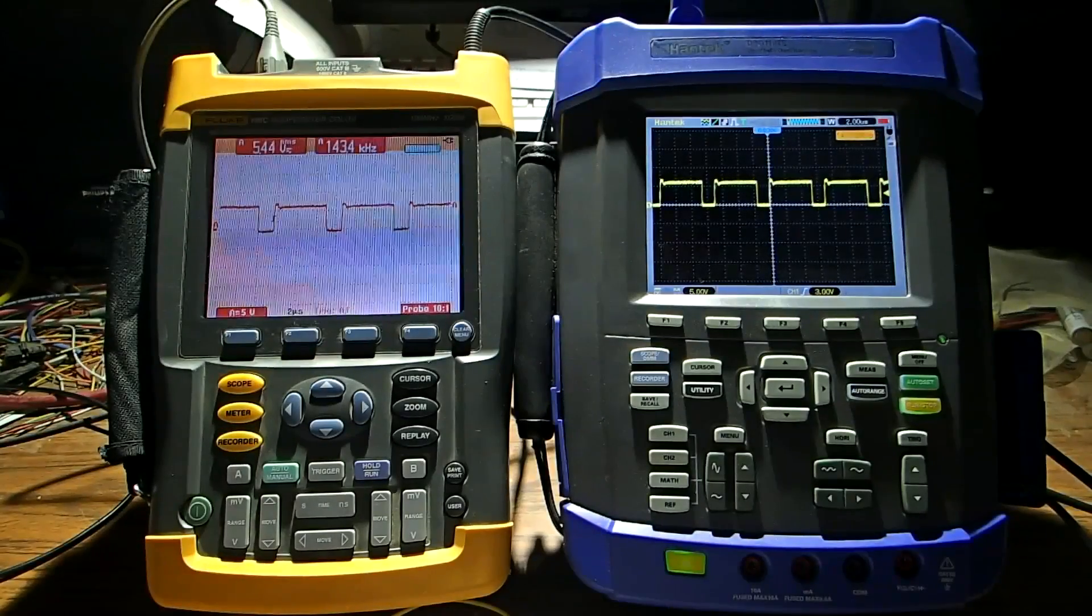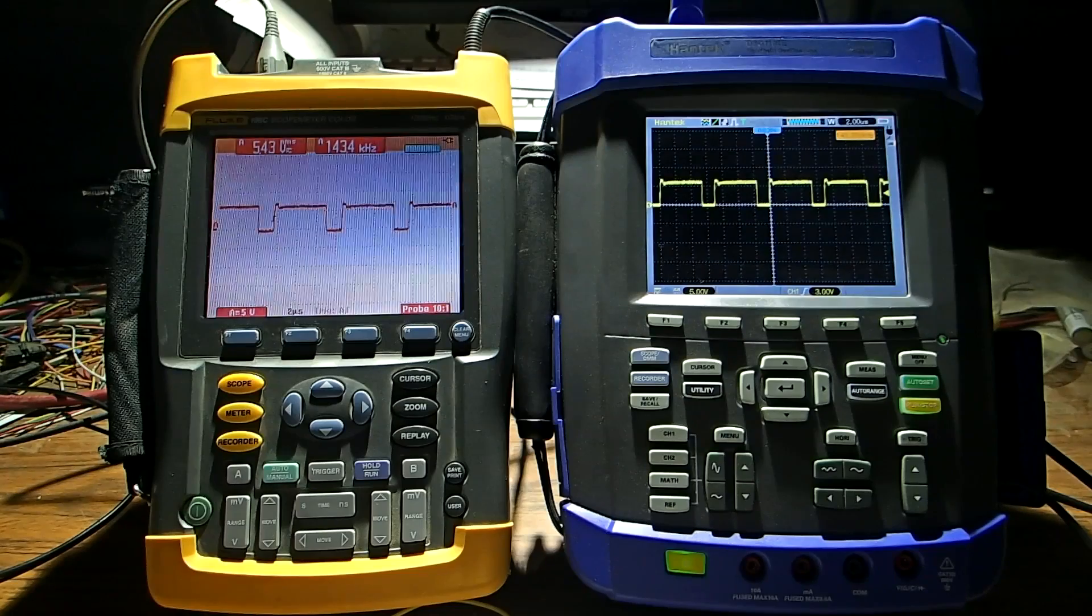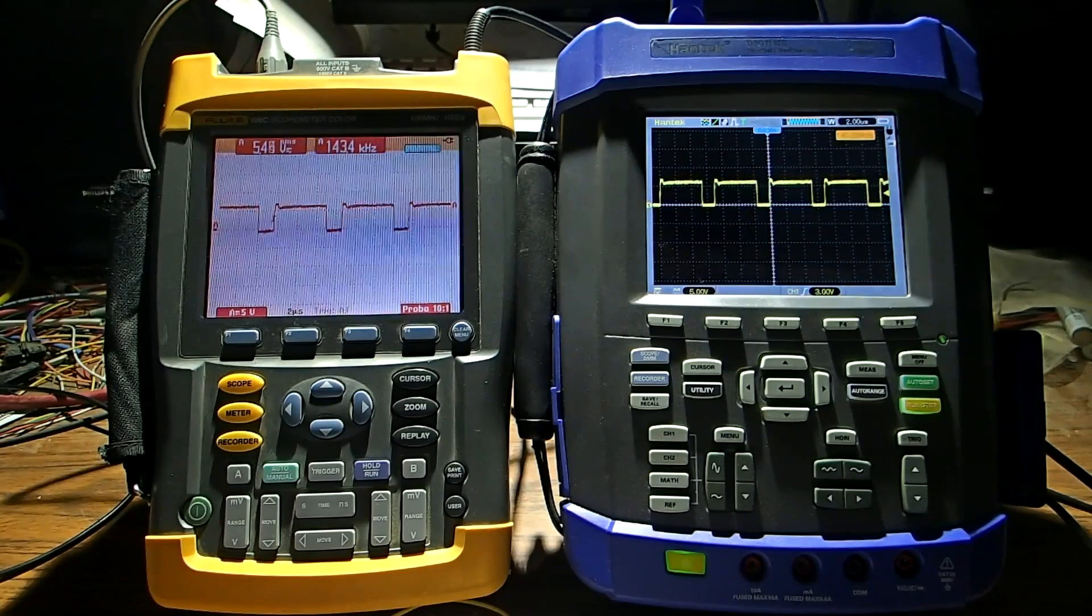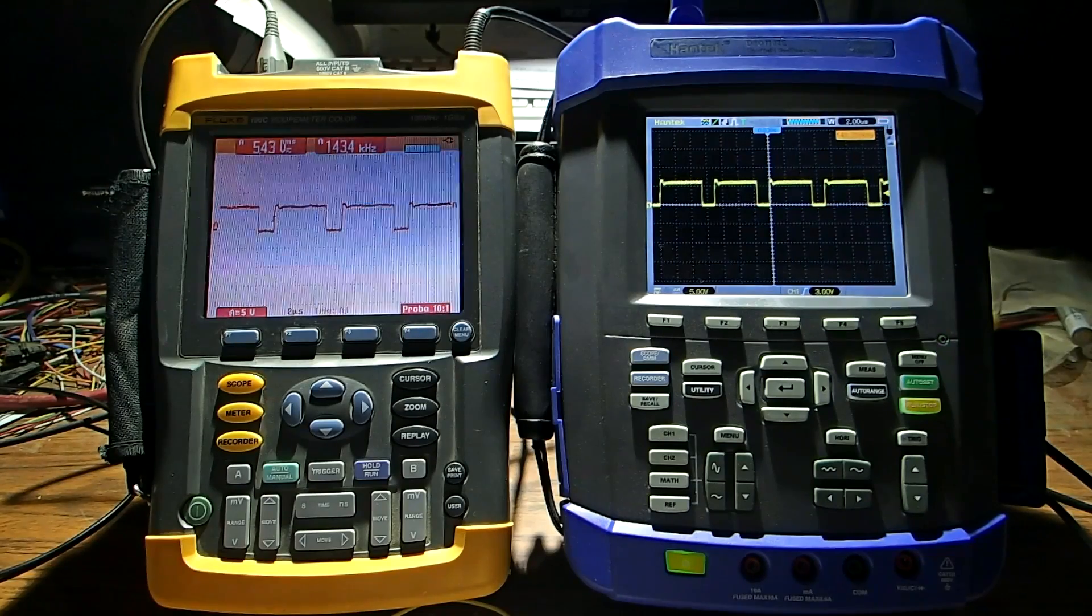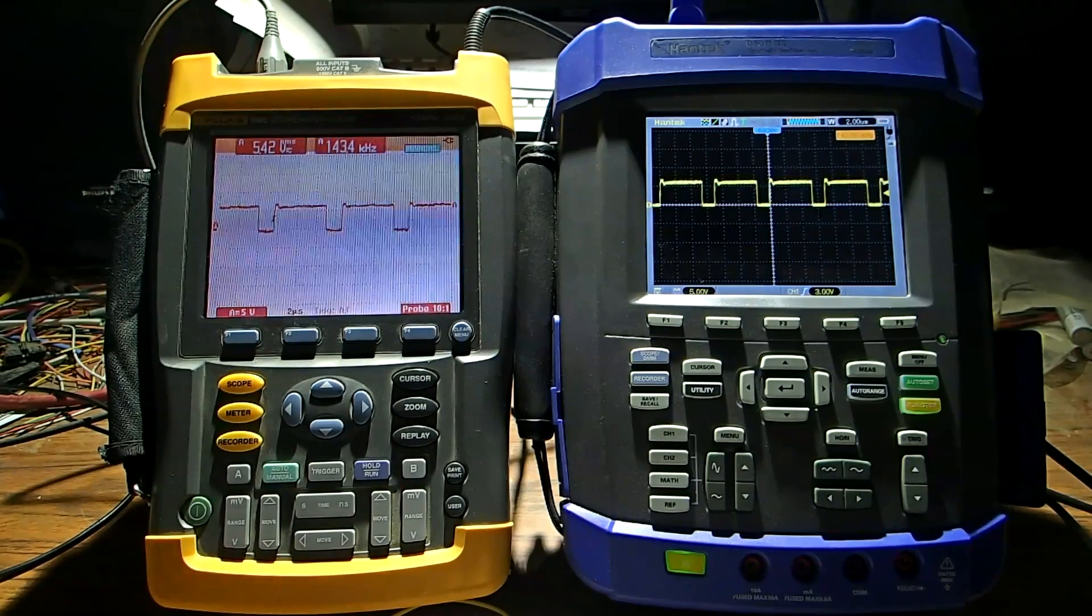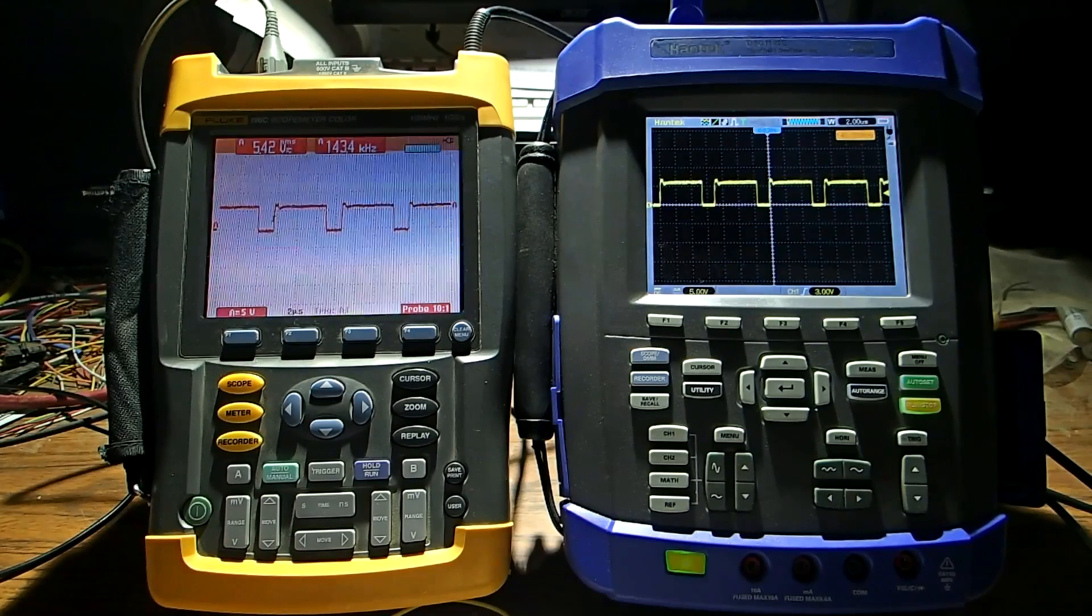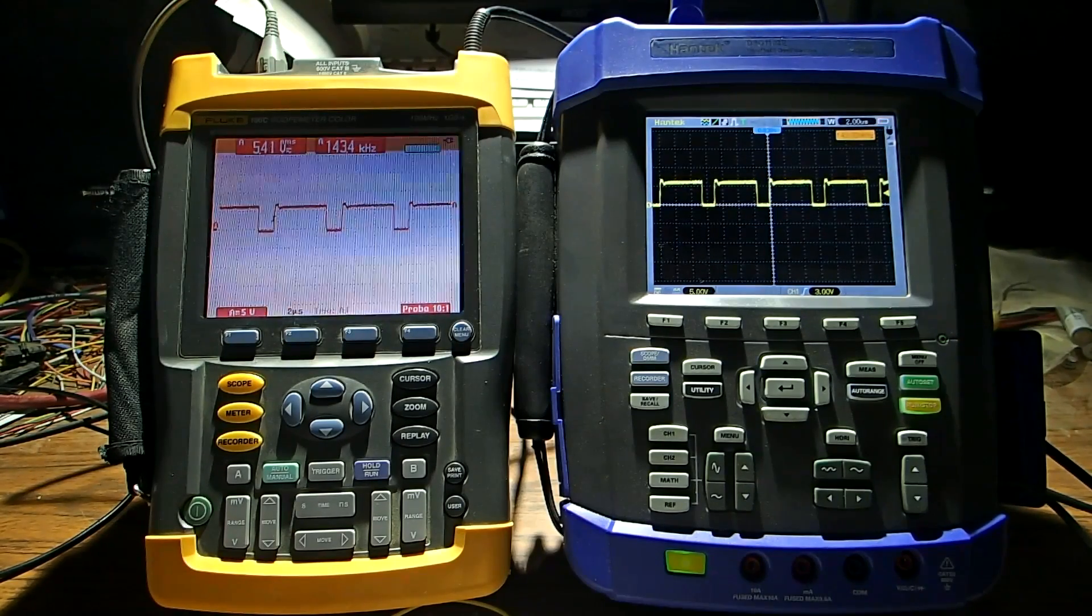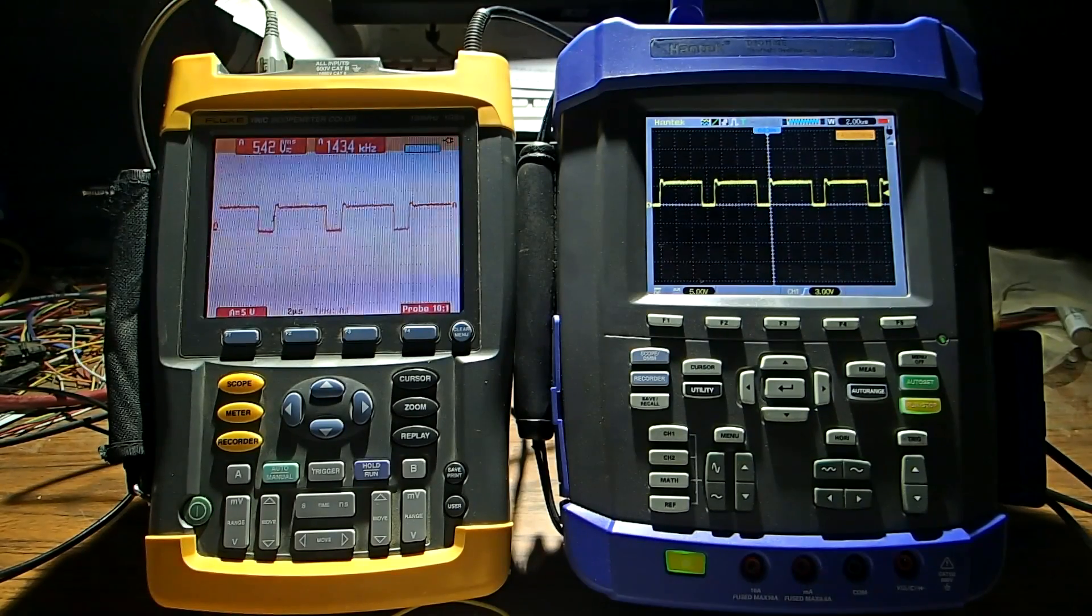Now when I first got this Hantec scope it came with some cheap probes. I mean they might have been good at another time but they were not flat and clean. They were rounding the waveform off no matter what. You couldn't adjust them or anything. Maybe they were broken inside. So that at first I didn't suspect. I was suspecting the scope because it's $500.